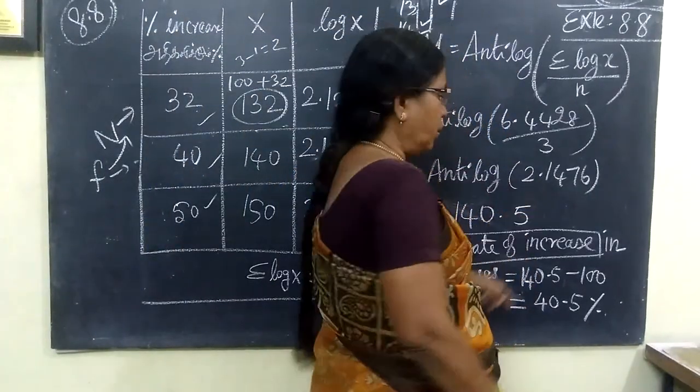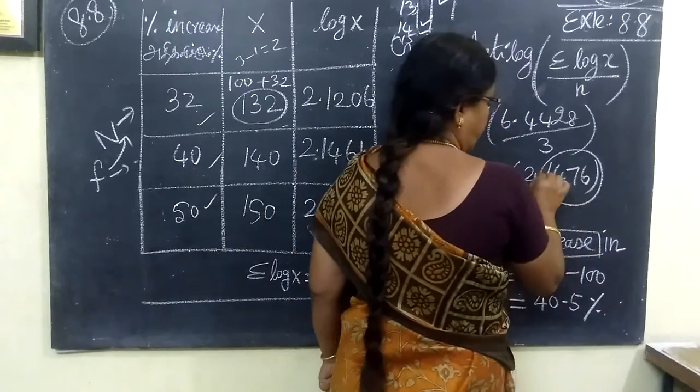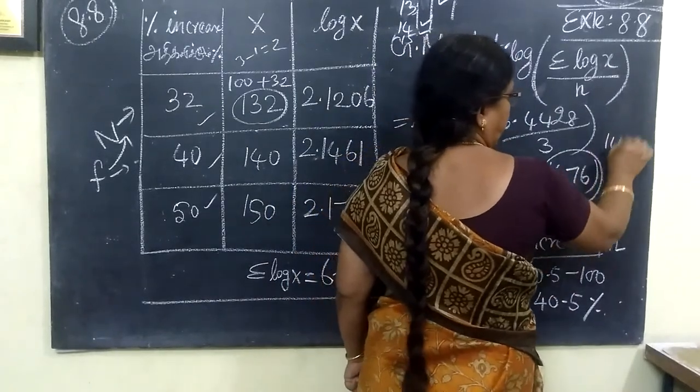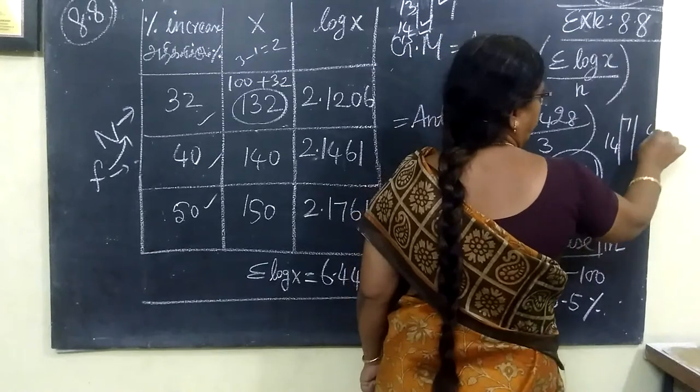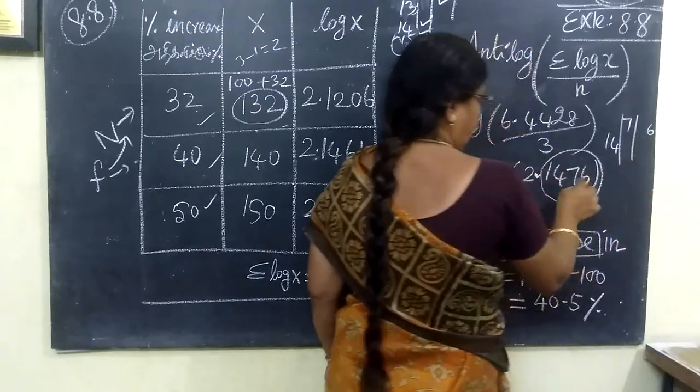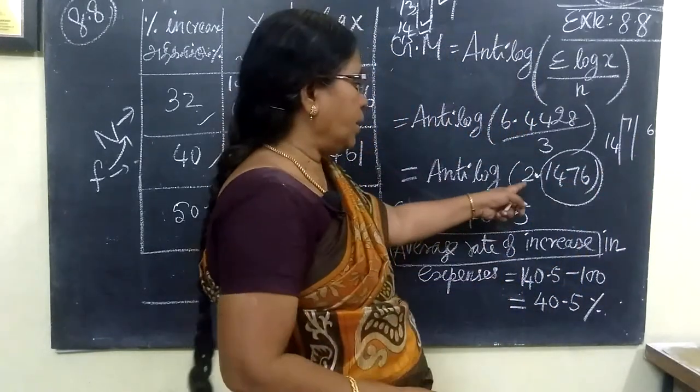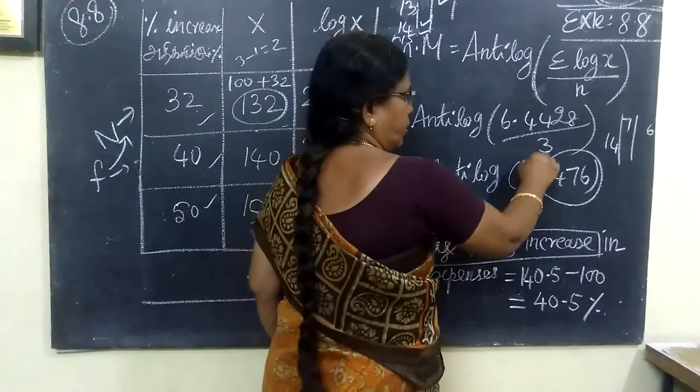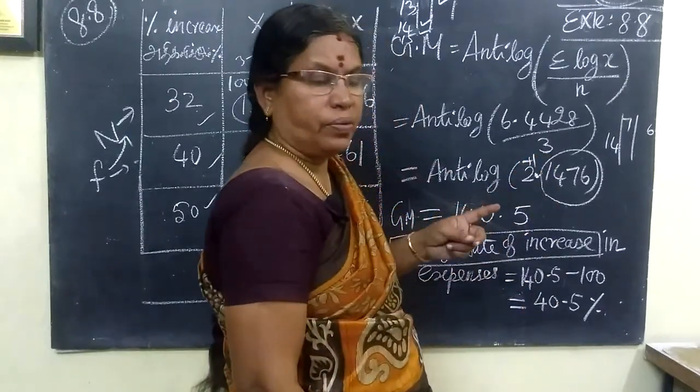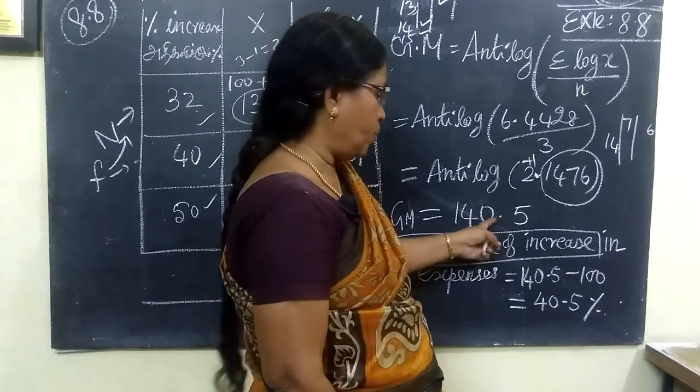And find the antilog. Carefully - 6.4428 divided by 3 gives 2.1476. Looking up the antilog with 4 digits: 14, 7, mean difference 6, plus 1, gives us 3 digits. Keep the decimal point, so the answer is 140.5.